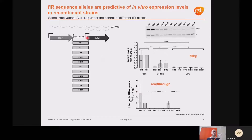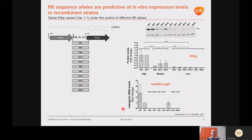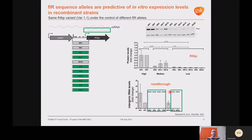To test our hypothesis, we created isogenic recombinant strains where the same FHBP variant 1.1 was under the control of different FIR alleles. Western blot data showed that differences in expression are determined by the FIR alleles, and we identified three expression groups: high, medium and low. By qPCR, we measured bicistronic transcript levels and found that the highest-expressing strains have read-through from the CBBA promoter, while for other strains FHBP expression is driven only by the dedicated FHBP promoter.